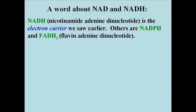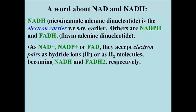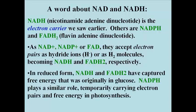In their oxidized forms — NAD+, NADP+, and FAD — they accept electron pairs from reduced molecules, again either as a hydride ion or as whole hydrogen molecules. As reduced electron carriers, NADH and FADH₂ have captured a significant amount of the free energy that once was in a glucose molecule.